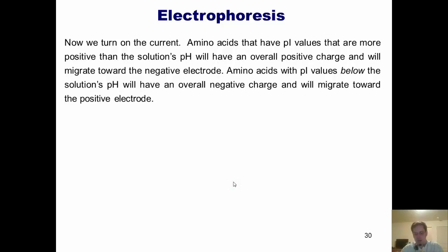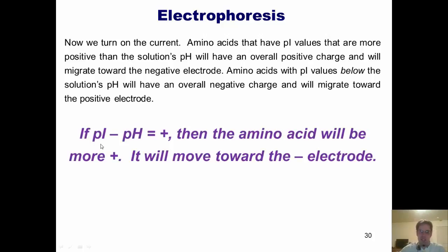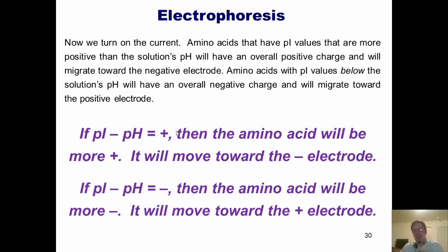Simply put, amino acids that have isoelectric point, or pI values, that are more positive than the solution's pH will have an overall positive charge and will migrate toward the negative electrode. Amino acids with pI values that are below the solution's pH will have an overall negative charge and will migrate or feel attracted toward the positive electrode. To summarize this more simply, I've written up some equations here. If pI minus pH is positive, then the amino acid will be more positive. It will hence move toward the negative electrode because things that are positively charged are attracted towards negatively charged stuff. The converse is also true. If pI minus pH is negative, then the amino acid will be more negative. It will then move toward the positive electrode in electrophoresis.